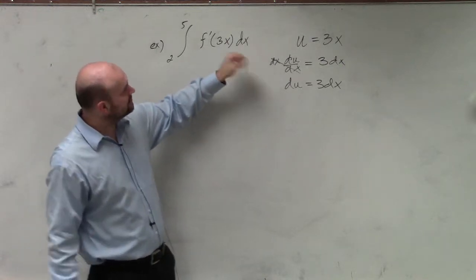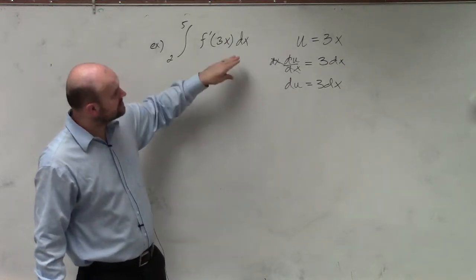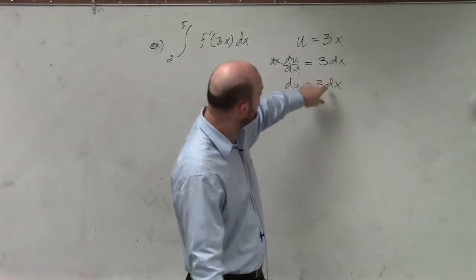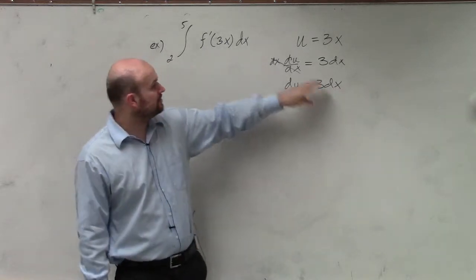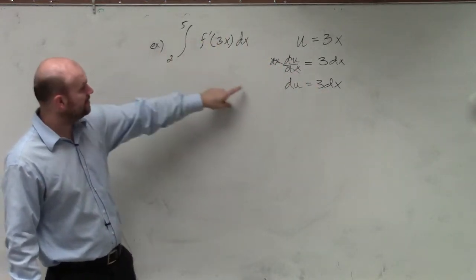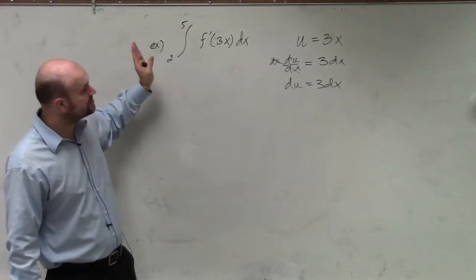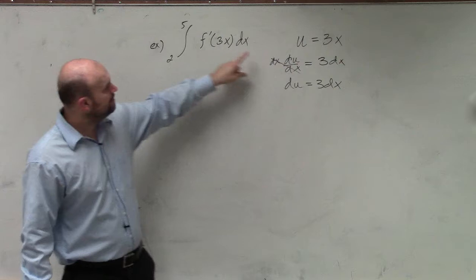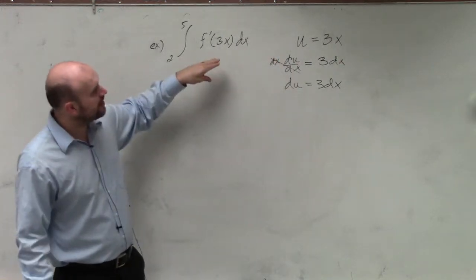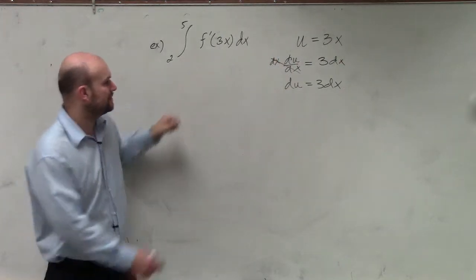So now what you can see here is we don't have our 1/3, if you remember from last class period, so we're going to have to multiply that on the outside. We don't have a 3 there, so we're going to take that outside of the integral, so it's still included. But we have our dx, and we have our u, which is our 3x.